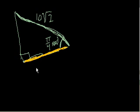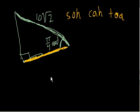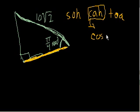What trig function deals with the adjacent side and the hypotenuse? Let's write down our mnemonic: SOHCAHTOA. Which one uses adjacent and hypotenuse? It's CAH — C is for cosine. Cosine of an angle is equal to the adjacent over the hypotenuse.